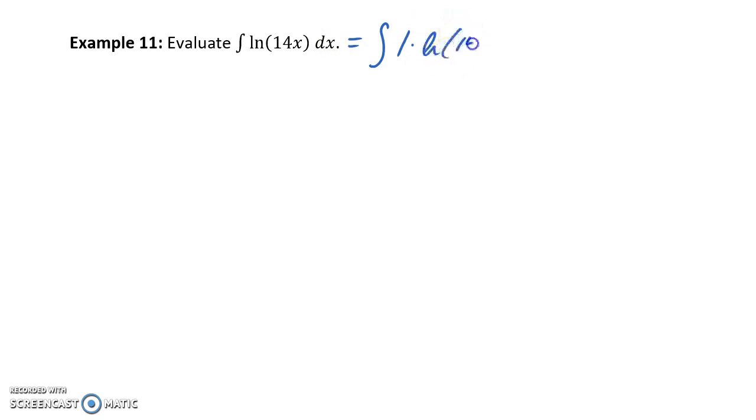We'll look at walking through one more example of this, in this case kind of an extra tricky example. So here what we have is the integral of the natural log of 14x. In this case, it doesn't appear as though we have the product of two functions, but we could rewrite this as 1 times the natural log of 14x dx. So we have a log function, meaning that's our best choice for our substitution statement for u, and then dv will become everything that's left over. So in this case, 1 dx.